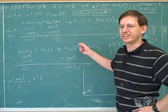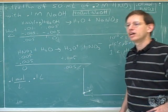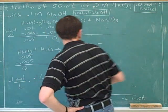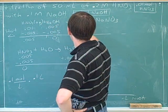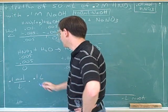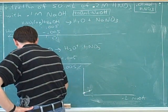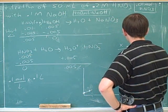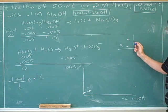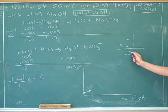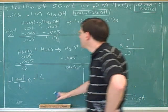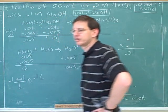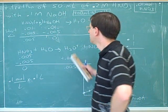Right — I would do this on paper. We have 0.1 molar sodium hydroxide and 100 milliliters, which is 0.1 liters. So on paper: 0.1 times 0.1 — 1 times 1 is 1, and there are two decimal places, so the answer is 0.01. That changes the NaOH amount to 0.01 moles.